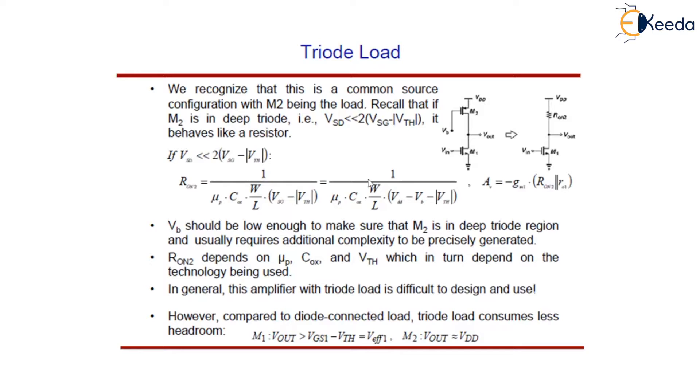And this VSD, in this case, we have applied a voltage at the gate terminal of M2, VB. So this VSD will be equal to VGD minus V2. So 1/(μP·Cox·W/L·(VGD - V2 - VTH)).